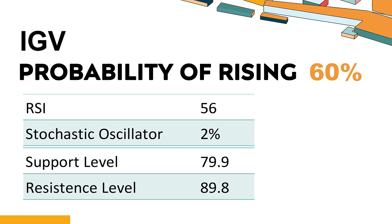The probability of IGV's share price rising is 60%. When the probability of rising is higher than 50%, it means that the stock has a higher chance of rising. Combining multiple technical analysis indicators, IGV has 5 bullish signals and 2 bearish signals.